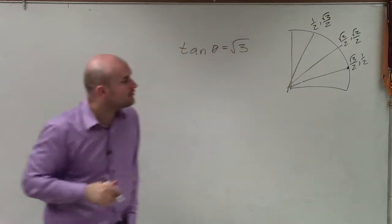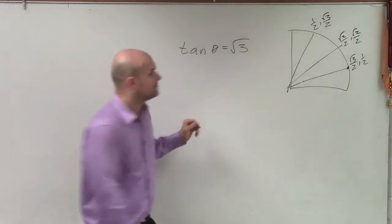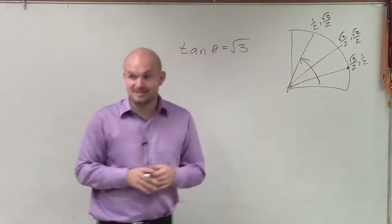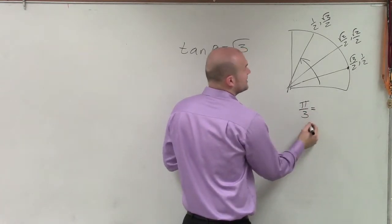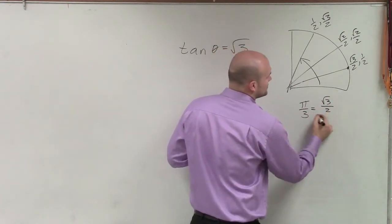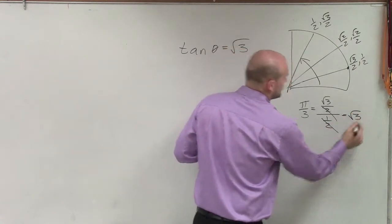So I'm going to see which y over x coordinate is going to produce the square root of 3. Well, you can say, yes, be 60 degrees, which is pi over 3, because you have square root of 3 over 2 divided by 1 half. That equals the square root of 3.